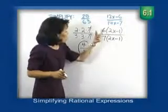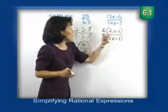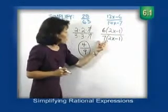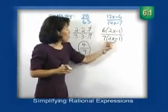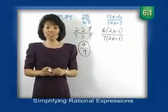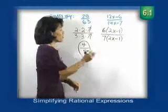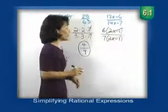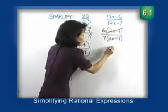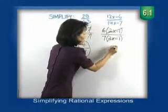Now notice we have a product of 6 times 2x minus 1, and 7 times 2x minus 1. So once we have products, now we can divide out those common factors. We can divide out this 2x minus 1 with this one here. So what do we have left? Simply the fraction 6 sevenths.